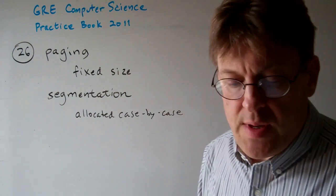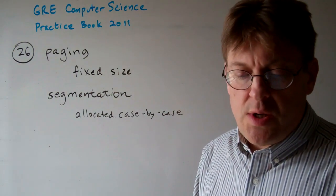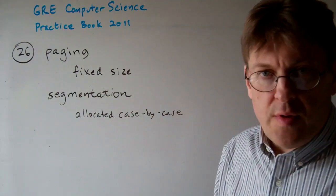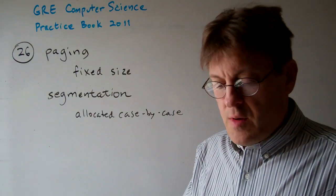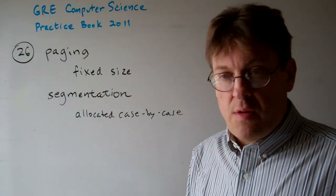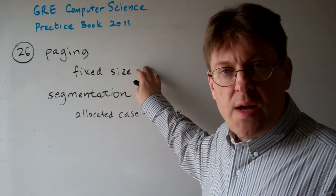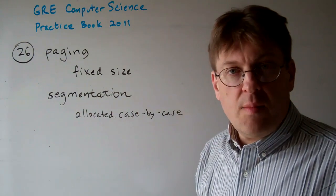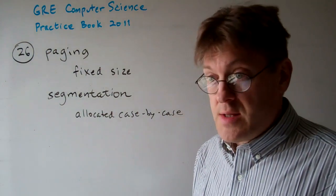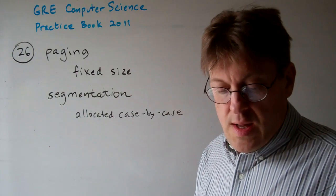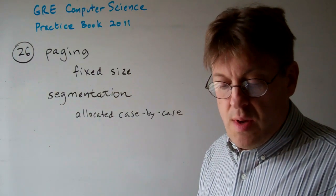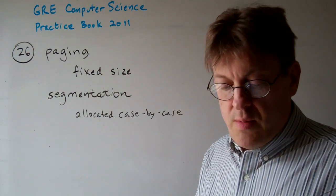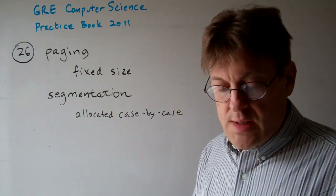Question 26: Which of the following best describes the difference between paging and segmentation — and we're talking about memory segmentation here. It's basically a definitional thing: paging is taking fixed-sized areas in memory, and segmentation is allocating memory in different sizes case by case. The answer is A — paging breaks a process's virtual memory into physical units of the same size, whereas segmentation breaks a process's virtual memory into logical units that are typically of different sizes. That is correct.